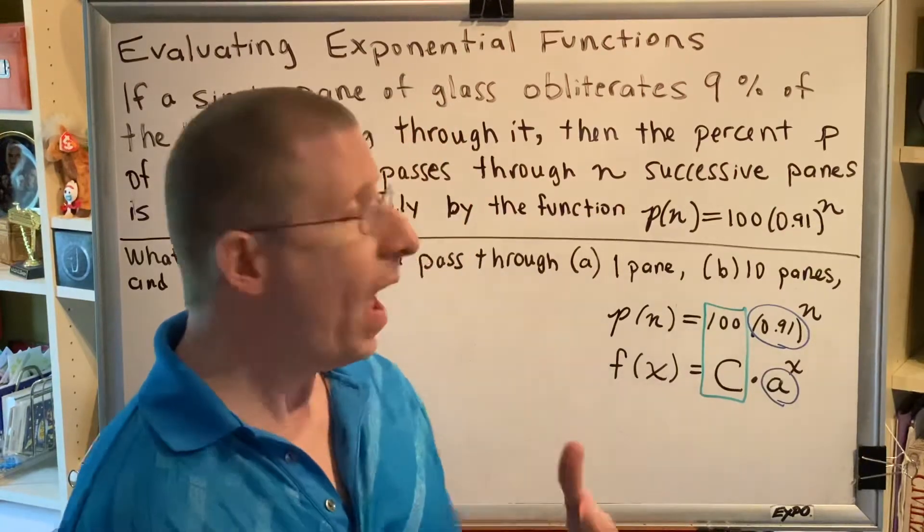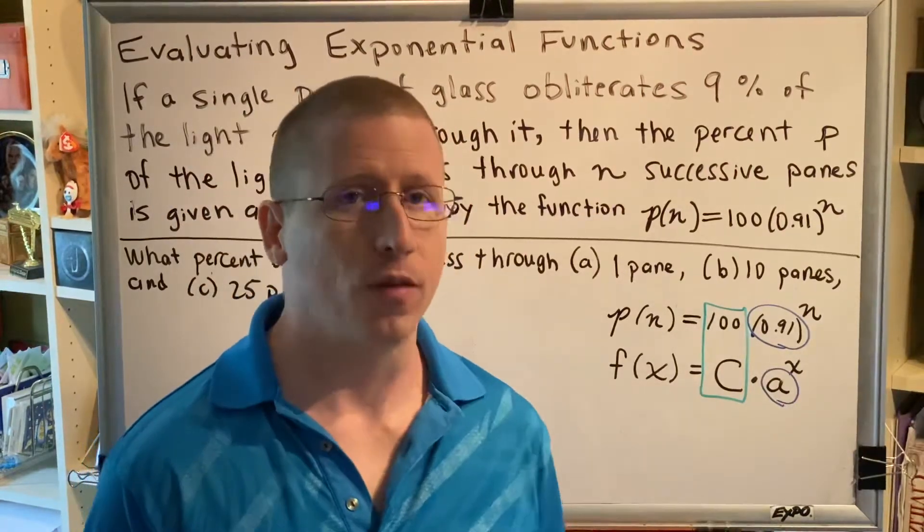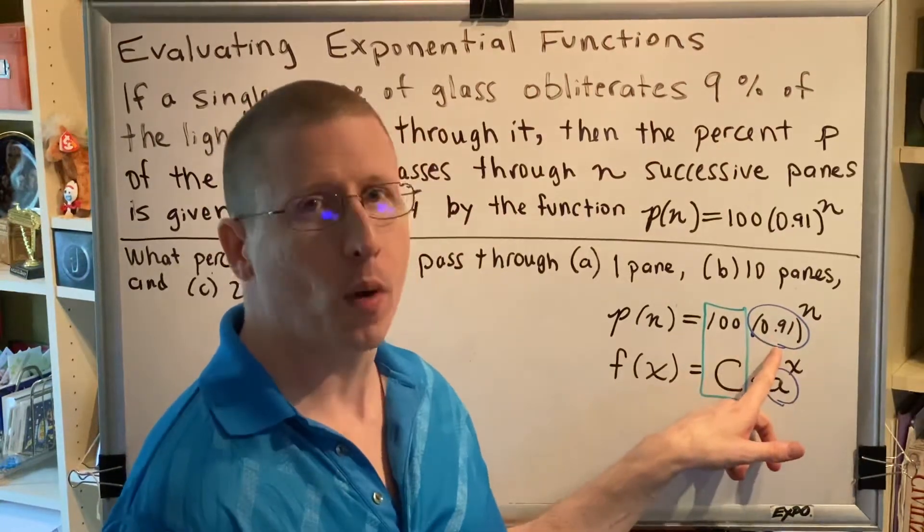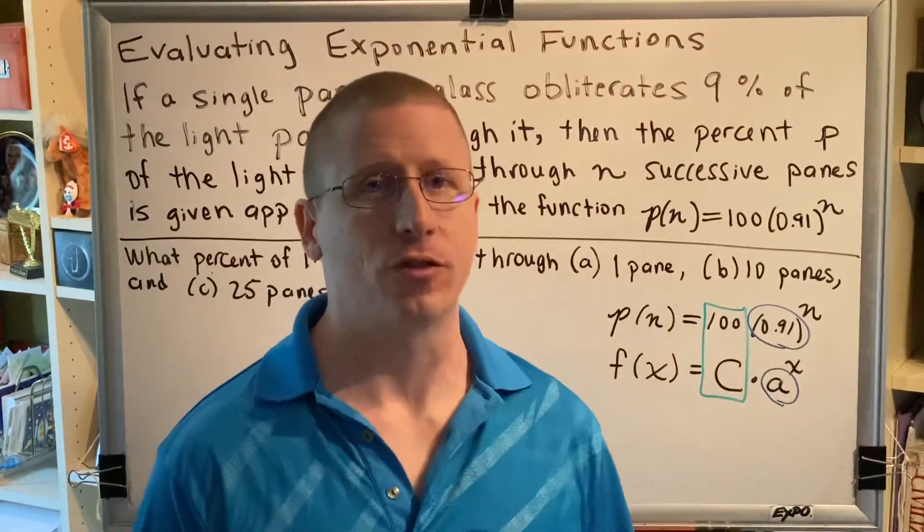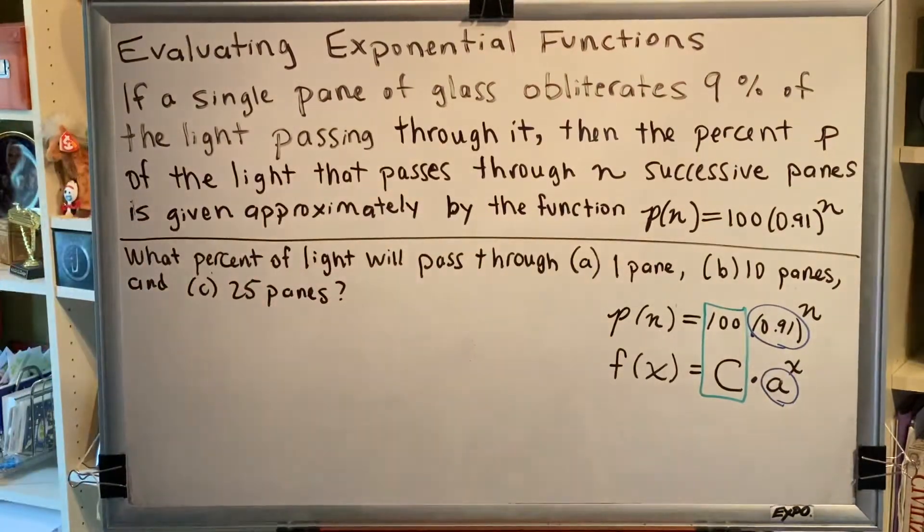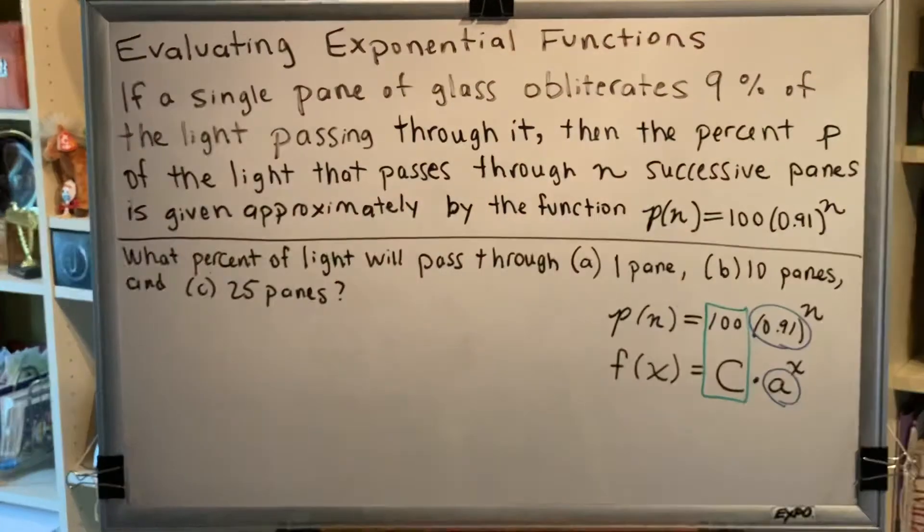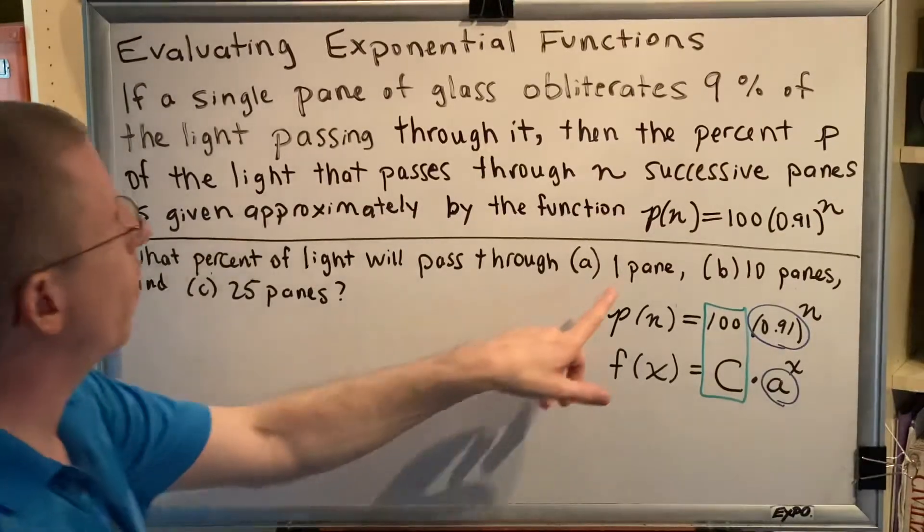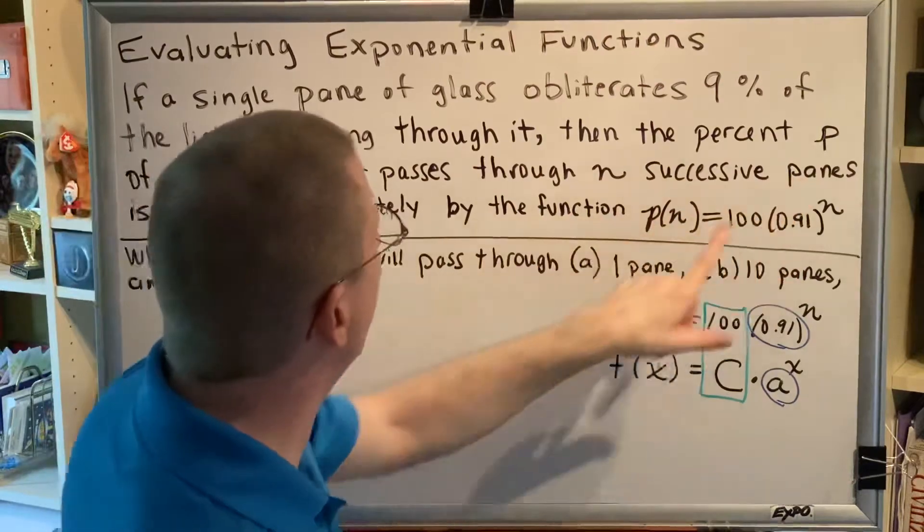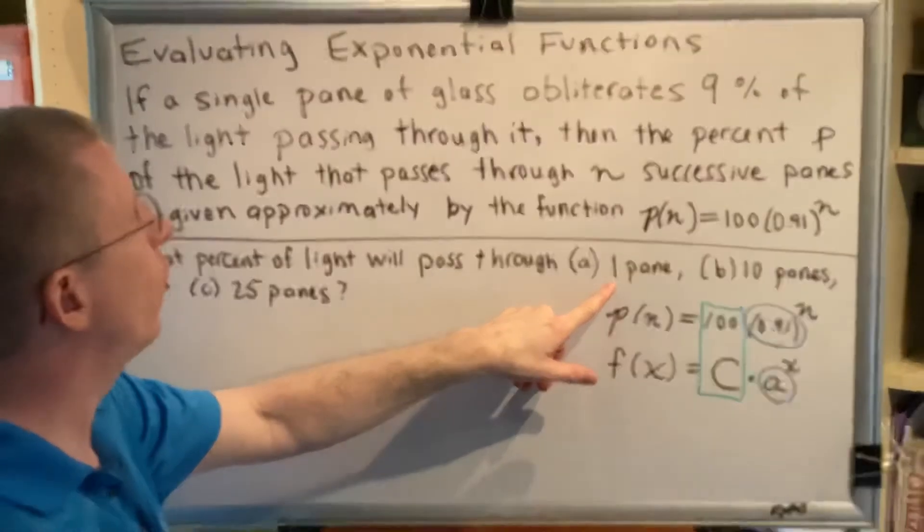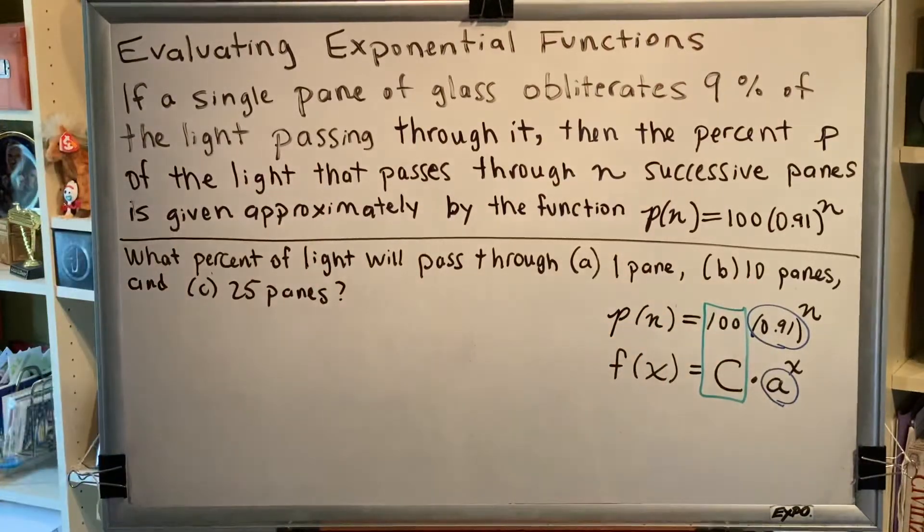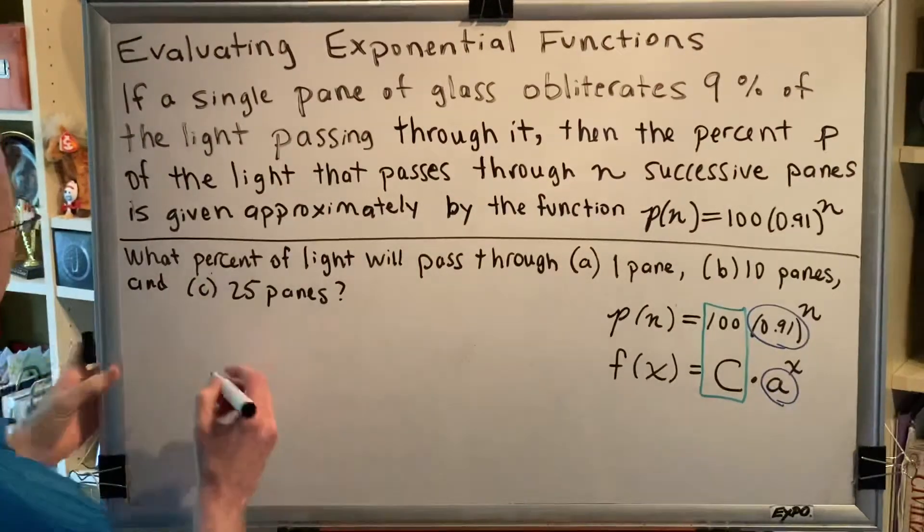So if we want to figure out how much light gets through the other side of the glass, you take the percent that you have and multiply it by 0.91, and that tells you what gets through on the other side. Now that we understand what this is telling us, we can solve this problem pretty easily. They're telling us the number of panes, and in the instructions it says n successive panes. So this number right here, this 1 is the value of n. This 10 is the value of n. This 25 is the value of n. So here we go. Let's evaluate.